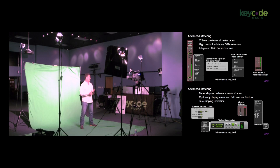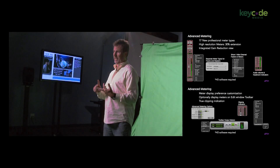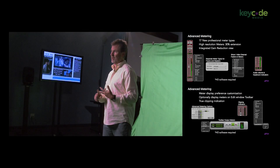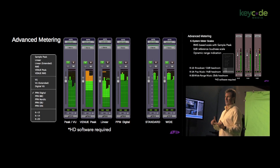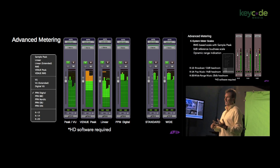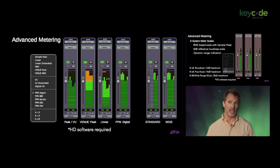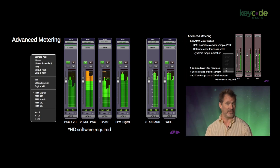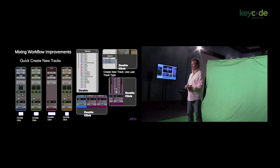Pro Tools HD has 17 different meter scales for metering, whether you want to look at PPM digital, linear extended, or venue-style metering — you have a choice. You've got K14, K18, K20 metering. You can actually have separate metering on your master faders versus the rest of your session.